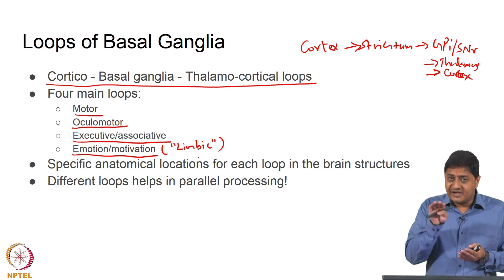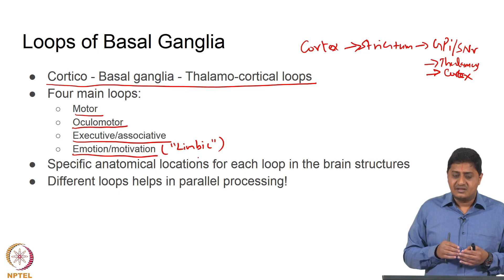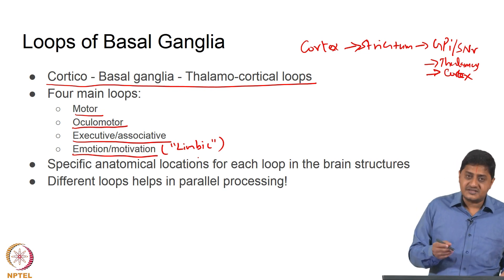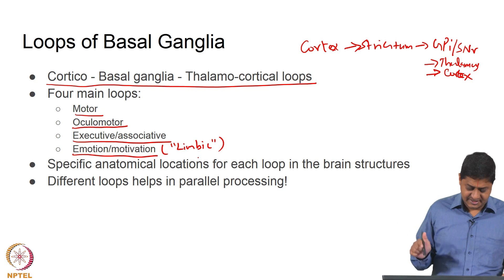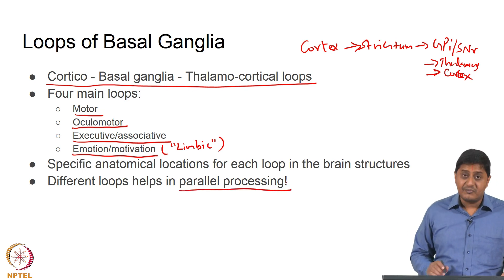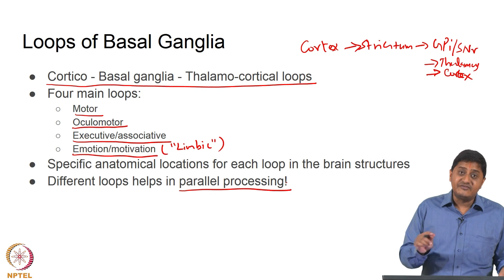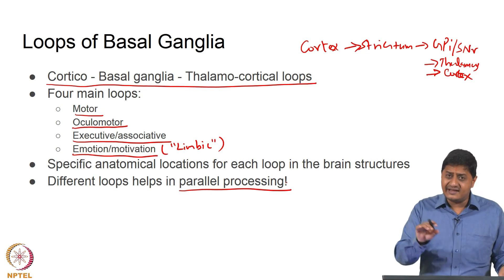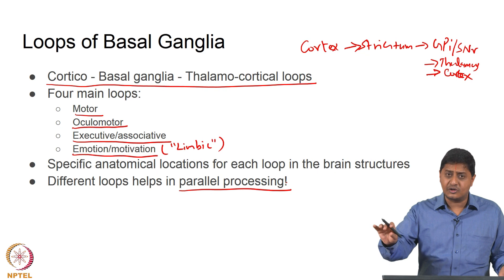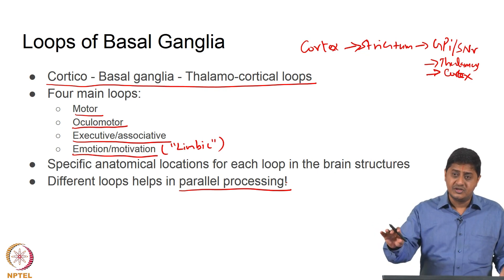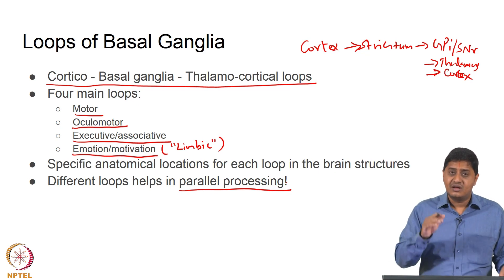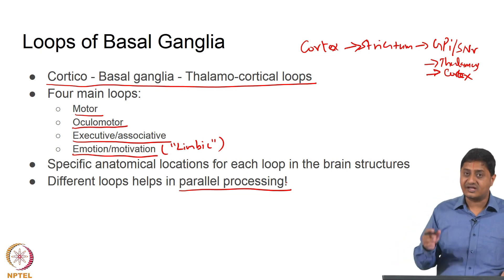Different aspects are processed in different pathways within the basal ganglia. Essentially the basal ganglia performs parallel processing of different aspects of behavior. There is a dedicated motor loop, a dedicated oculomotor loop, a dedicated limbic loop, and a dedicated executive loop. For a given behavior, these four loops act in parallel simultaneously.